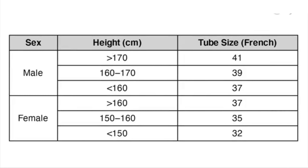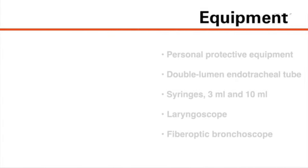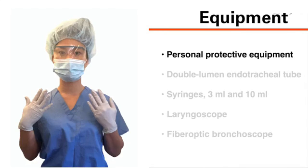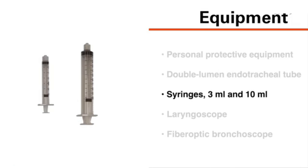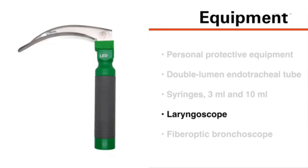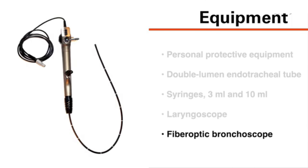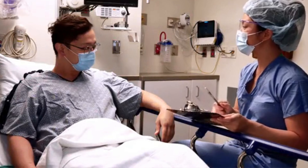In general, selection of an appropriate tube size is guided by the patient's sex and height. To perform the procedure, you will need the following equipment: personal protective equipment as required by your institution for the clinical scenario, a double-lumen endotracheal tube, 3 ml and 10 ml syringes, a laryngoscope, and a fiber optic bronchoscope.